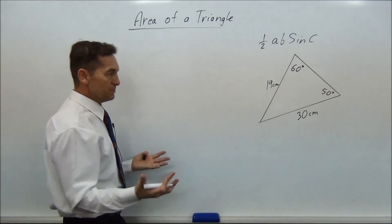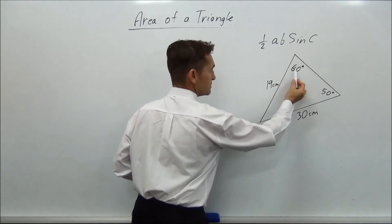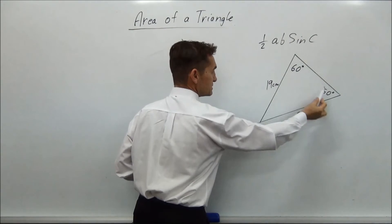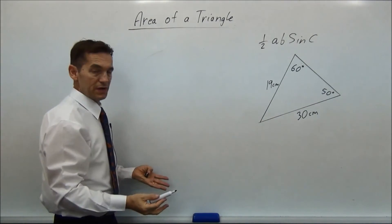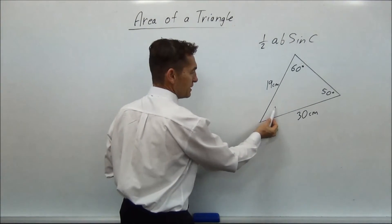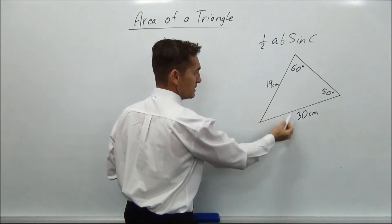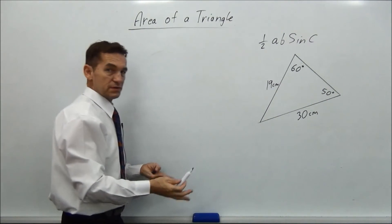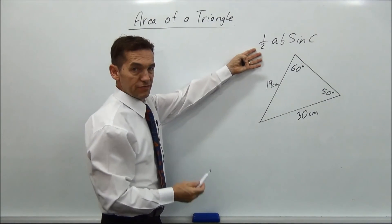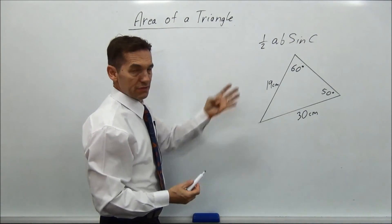And you go, oh, I can't do it. Well, yeah, you can, because you know that you've got to do another step. That plus that plus that is 180. And you've just got to figure that angle, and then you've got half AB sine C. So that's probably as difficult a question as you could get for this sort of triangular thing.